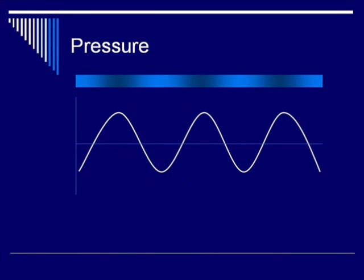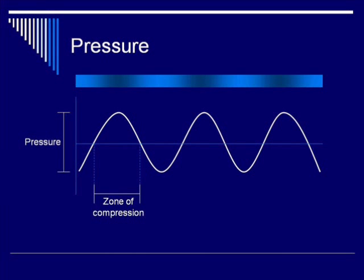Let's imagine we're looking at the pressure at a specific point in tissue where ultrasound is being applied. On the x-axis we have time, and on the y-axis we have pressure. As you can see, it looks like a sine wave. All of the areas where that sine wave is greater than zero is called the zone of compression, because the pressure is increased and all of the molecules are being squished closer together. The area where the pressure is highest is called the peak positive pressure.